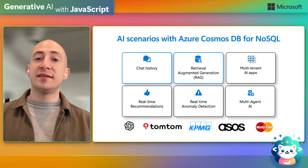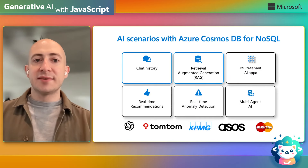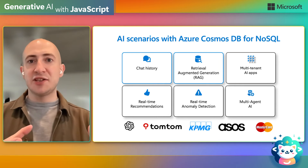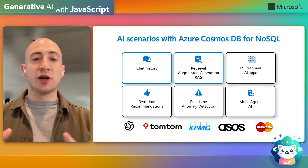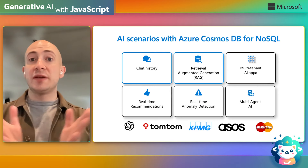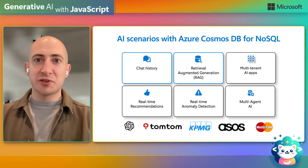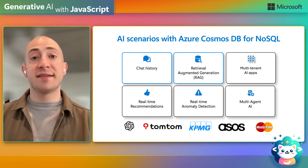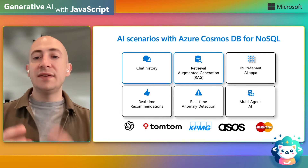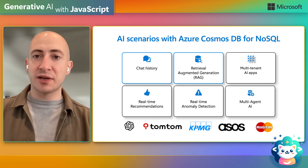There are lots of different scenarios that our customers are already building AI applications with Cosmos DB for NoSQL. We're going to talk about a few of them. There's chat history — as you talk to a large language model through a chatbot application, you might want to keep a record of that conversation, which is powerful for auditing or providing context on previous conversations. We can also do retrieval augmented generation, bringing the right data at the right time from your database to personalize your large language model. And there are use cases for multi-tenant apps, real-time recommendations, anomaly detection, and even multi-agent AI systems.